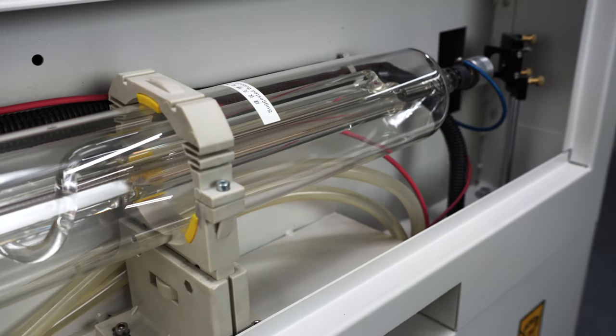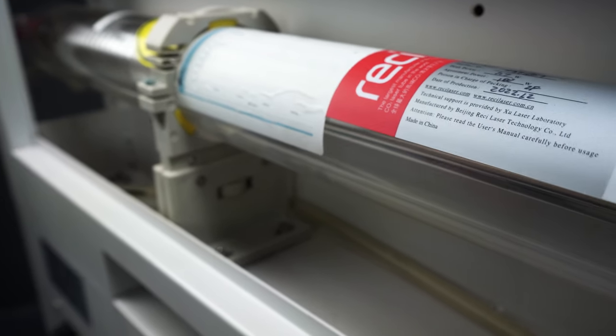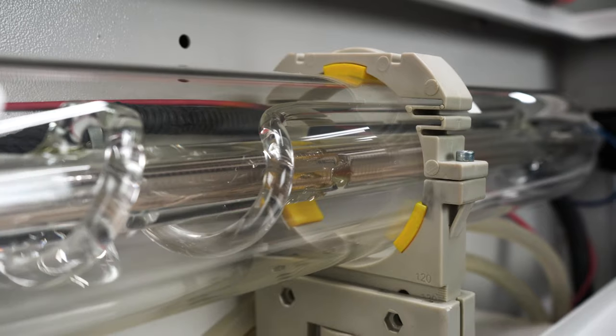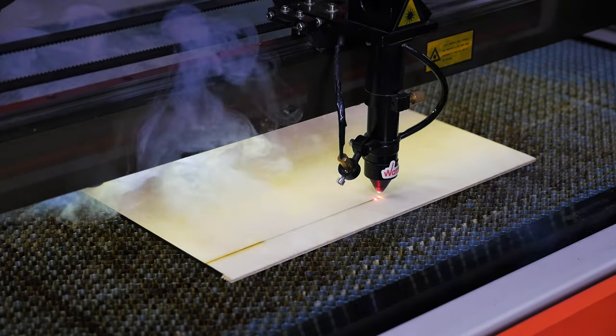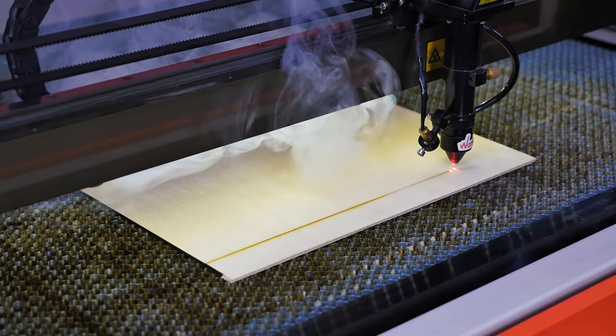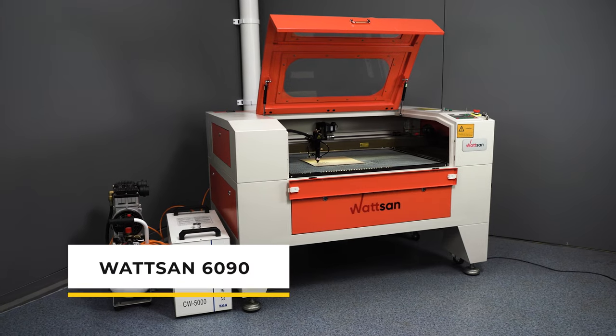If you often work with plywood thicker than 8 millimeters, you should use a laser tube with more than 100 watts, preferably 130 watts. Follow the rule of thumb of 10 watts power per 1 millimeter of plywood, but use the tube at 80 percent of its maximum power and it will last longer.